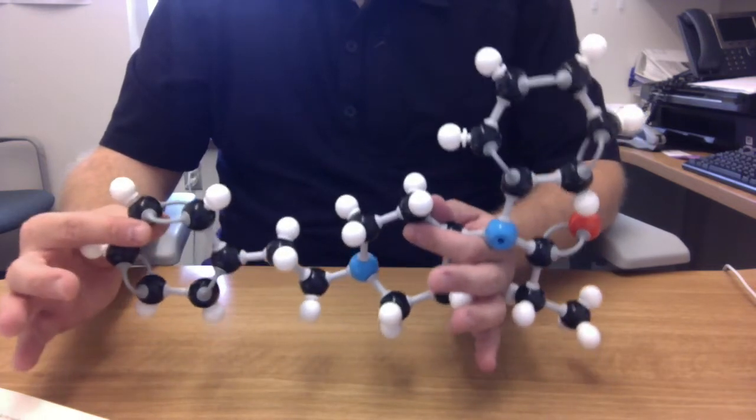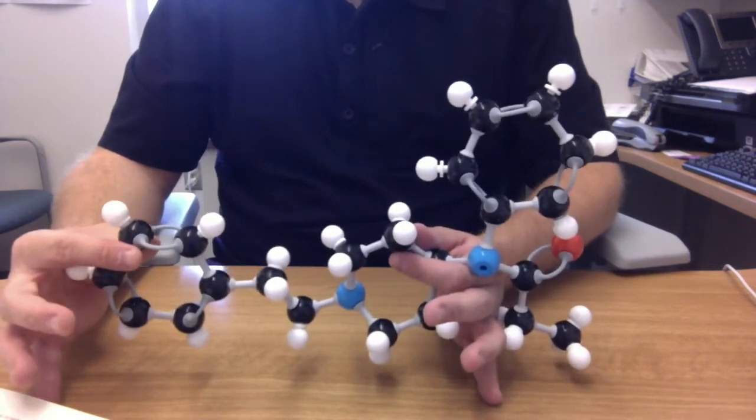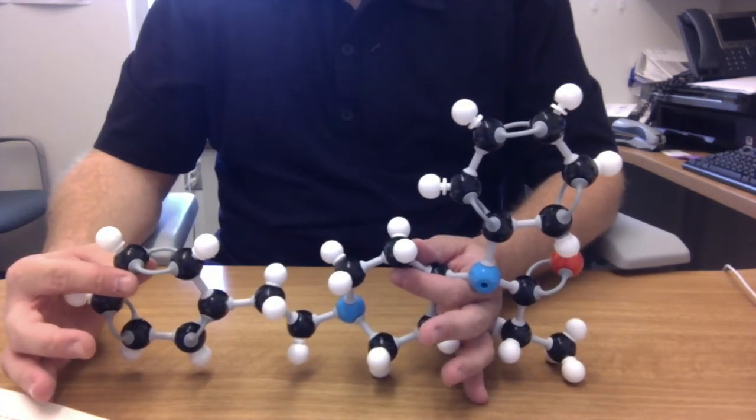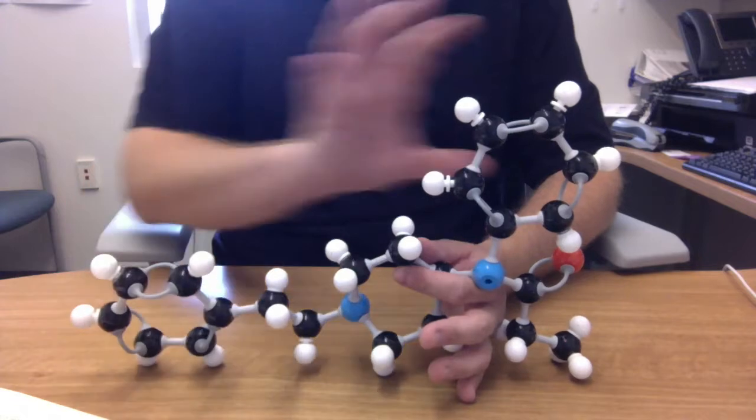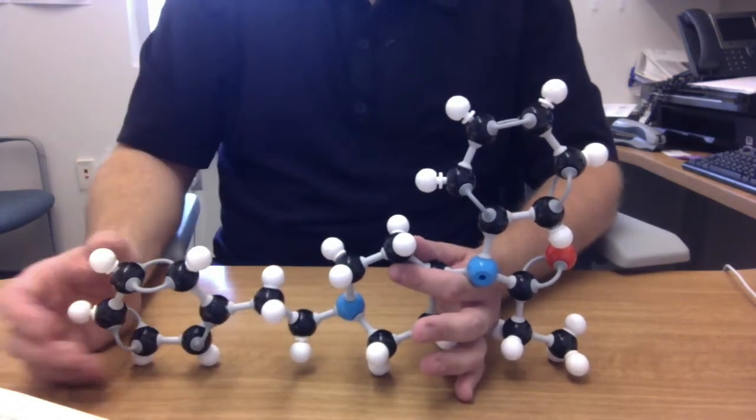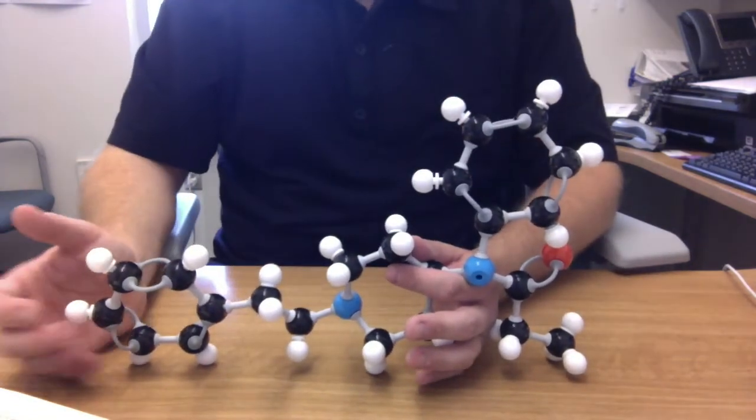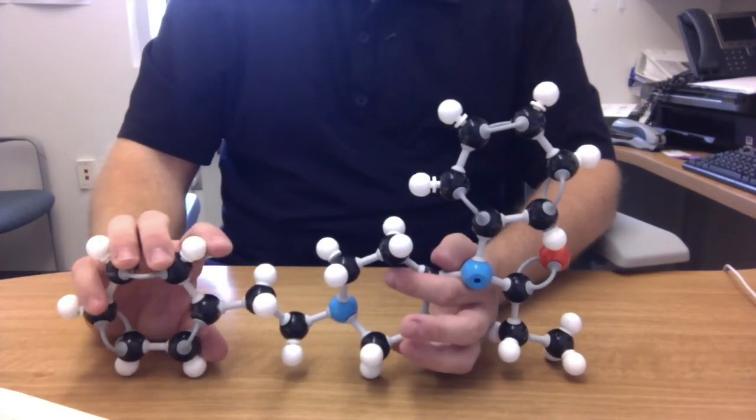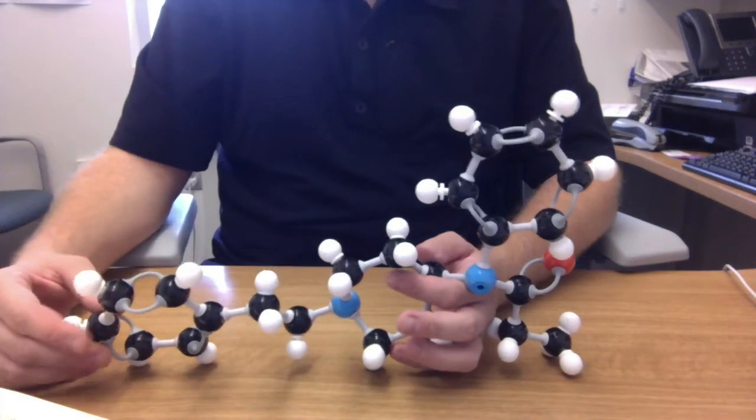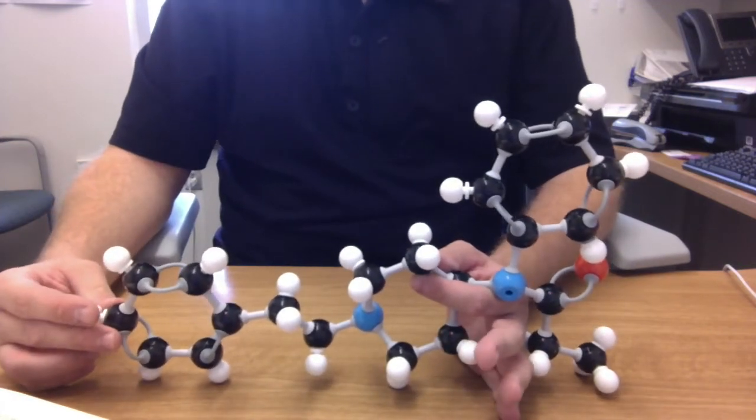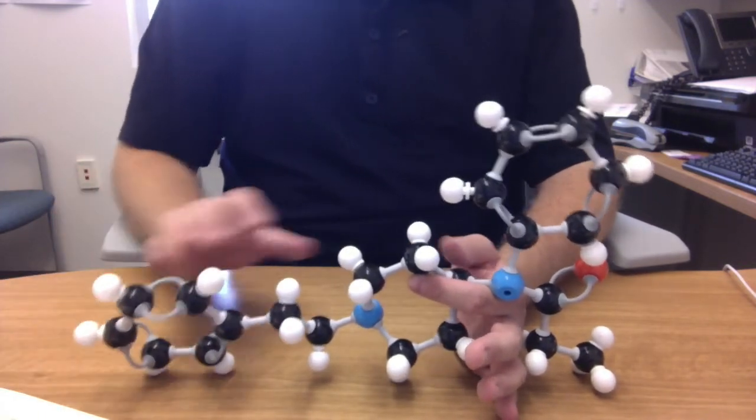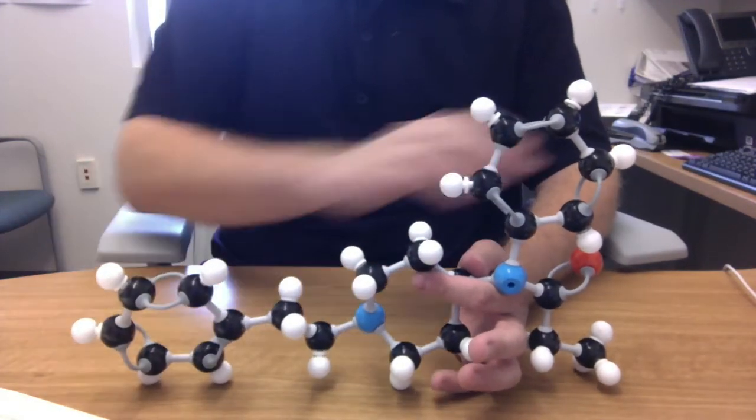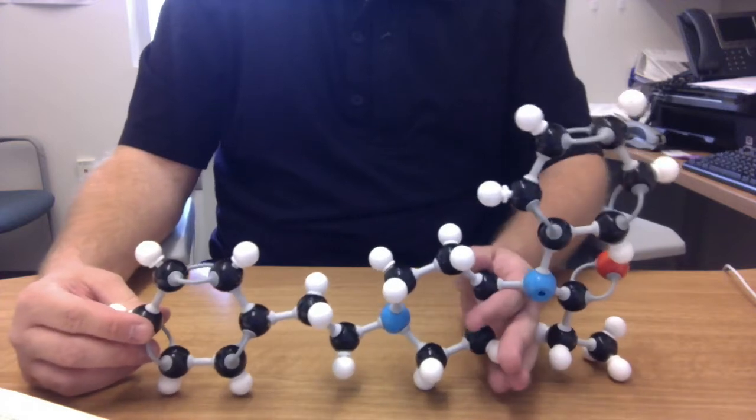So this is very different. This is a markedly different molecule than even than the methadone and the meperidine. The methadone, of course, had two aromatic rings more or less next to each other on one side of the molecule. The meperidine had an aromatic and a non-aromatic ring more or less next to each other, whereas fentanyl has three different rings, two aromatic rings and a non-aromatic ring, and they're just kind of spread throughout the molecule.